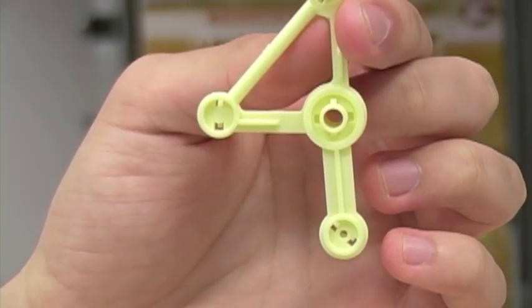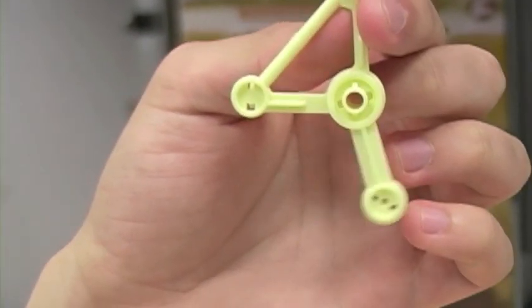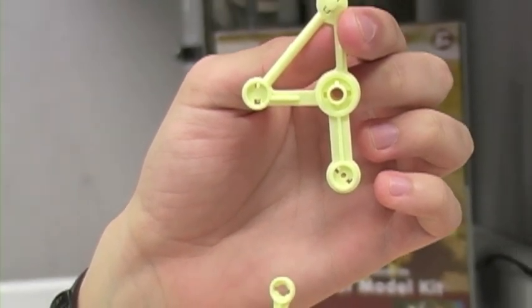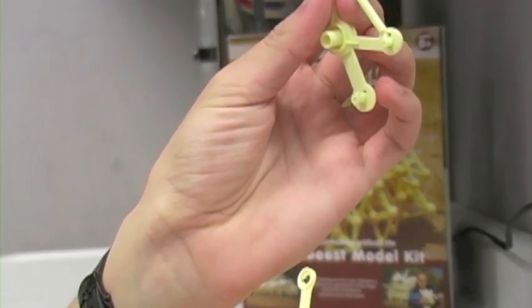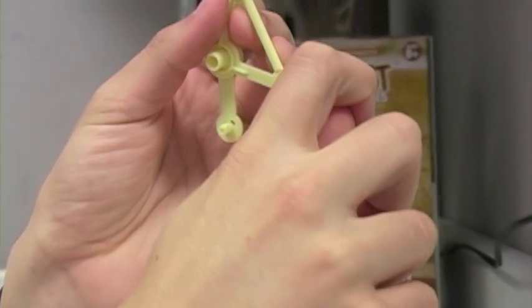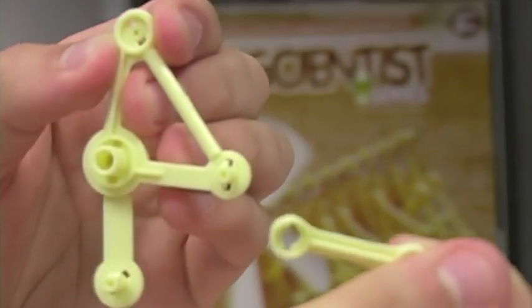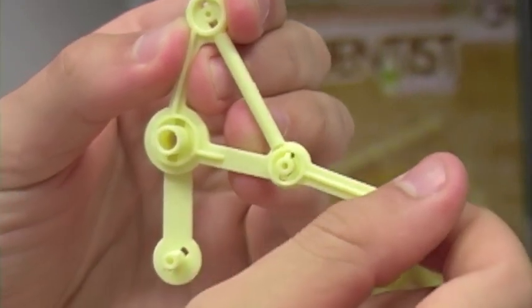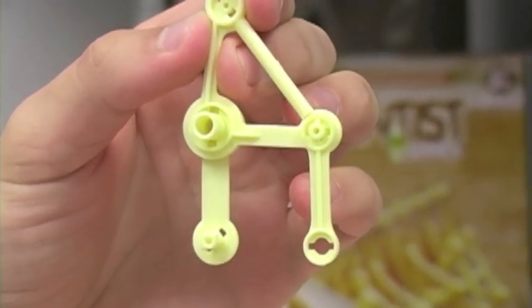Step three is going to involve taking part D and attaching it to the flip side of the part that you just used. Once again the joint should line up and you rotate it 90 degrees, and that concludes step three.